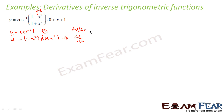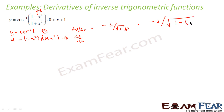Let's find dy/dt. If y = cos⁻¹(t), then dy/dt is nothing but −1/√(1 − t²). Substituting t = (1 − x²)/(1 + x²), this becomes −1 divided by the square root of 1 minus [(1 − x²)/(1 + x²)]². This is my dy/dt. Let's find dt/dx. Since t = (1 − x²)/(1 + x²), this is a u/v form.